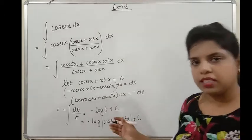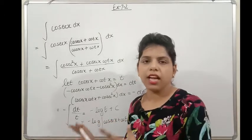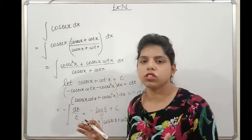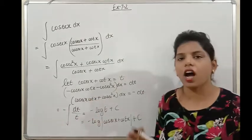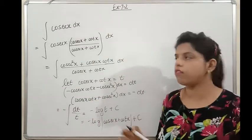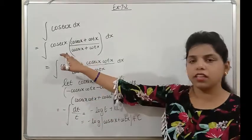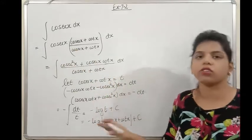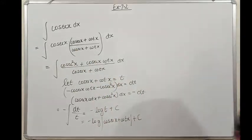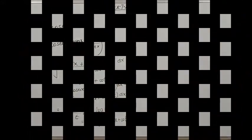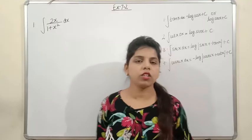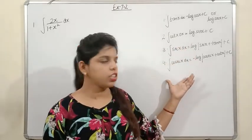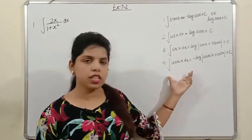So we have derived all four trigonometric integration formulas using substitution method: ∫tan x dx = log|sec x| + c, ∫cot x dx = log|sin x| + c, ∫sec x dx = log|sec x + tan x| + c, and ∫cosec x dx = −log|cosec x + cot x| + c. I hope you have understood all these formulas.